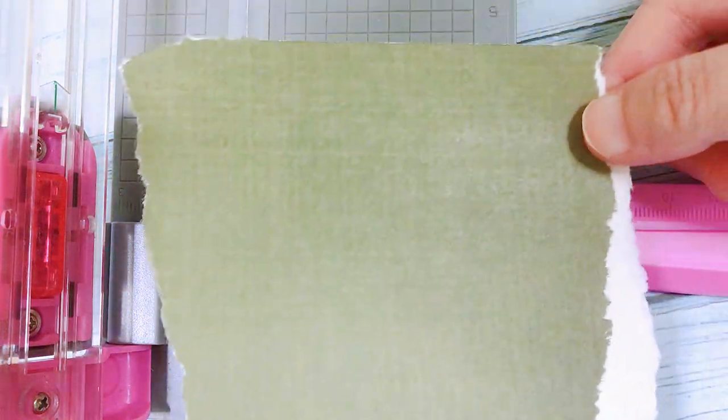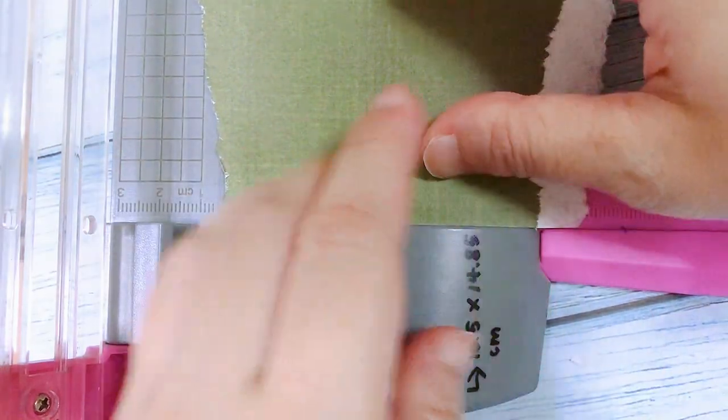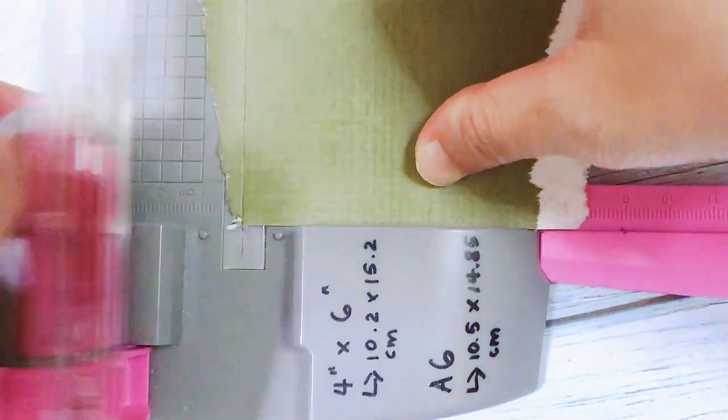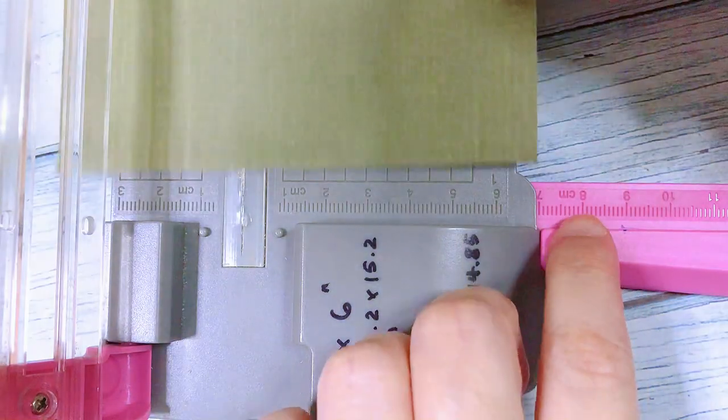Let's do this green one next. For untidy edges like this, I'll need to tidy it up a bit. So now with these two sides straightened, I can begin to trim it to size.